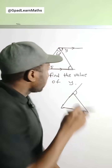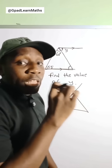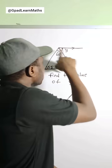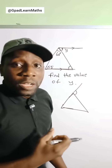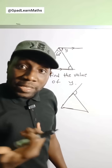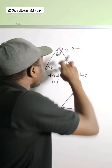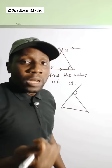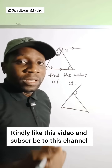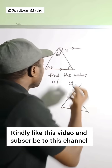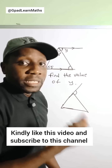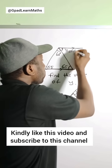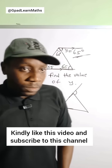Angle y here is an alternate angle to this angle here, so all I need to do is get the value of this angle and that will be equal to y. The sum of angles in the triangle is 180 degrees, so when you subtract from 180 degrees you are going to get 65 degrees. So the value of y here is also 65 degrees.